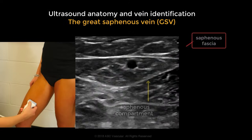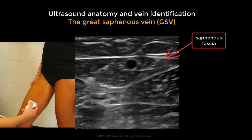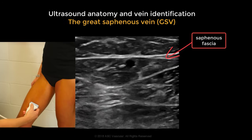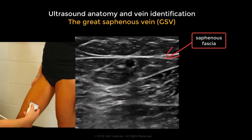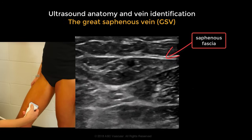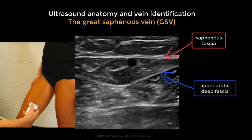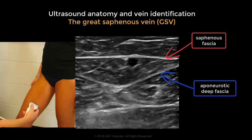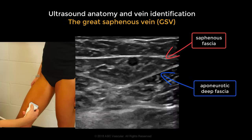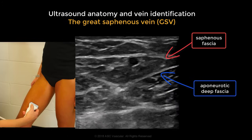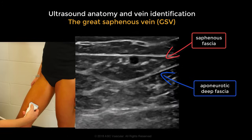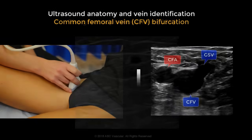It is contained within two fascias: the saphenous fascia, which is the more superficial one, and the deeper aponeurotic deep fascia. This is the typical appearance of the superficial veins, which includes the great saphenous vein and the small saphenous vein.